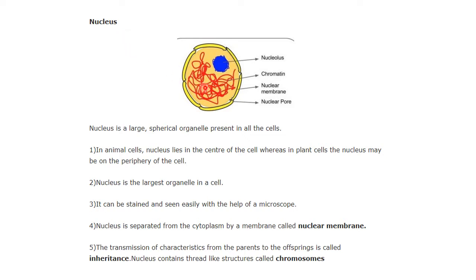When you see this nucleus, there are a few parts that are present in it. Inside a nucleus, there is another round structure that is called the nucleolus. There contains chromatin. Then the outer covering is called the nuclear membrane, and there are small pores present over the surface of the nucleus that are called nuclear pores.